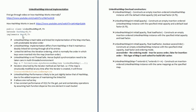LinkedHashMap is a hash table and linked list implementation of the map interface with predictable iteration order. LinkedHashMap implementation differs from HashMap in that it maintains a doubly linked list running through all of its entries. This linked list defines the iteration order, which is normally the order in which keys were inserted into the map — that is the insertion order.